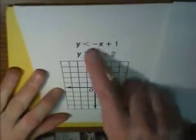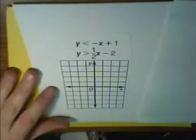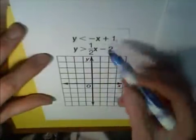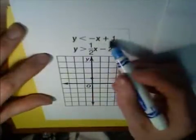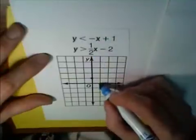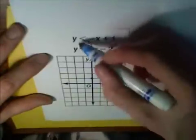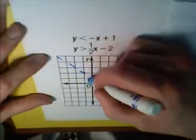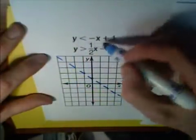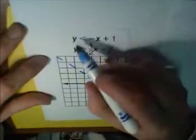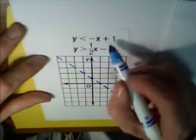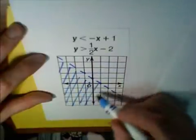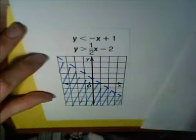Here, we're going to graph this linear system. I'm sorry, system of linear inequalities. The first one, we're going to do this quickly, has a y-intercept of plus 1. The slope is negative 1. And there's no equal to sign here. So this is going to be a dashed line. Now, where do we shade? It says y is less than the line we graphed. So we're going to shade below the line. So I'm going to use cross-hatching like that.